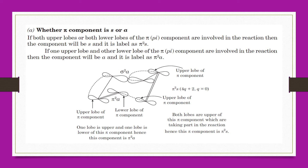Join up the components where new bonds are to be formed, making sure you join orbitals that are going to form new bonds. The two ends of the P orbitals show the upper lobe of pi.